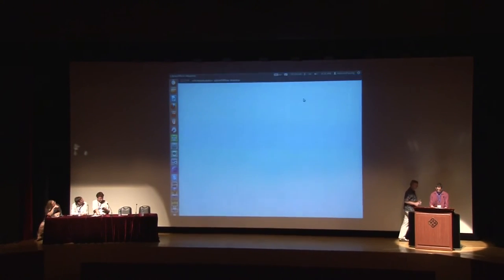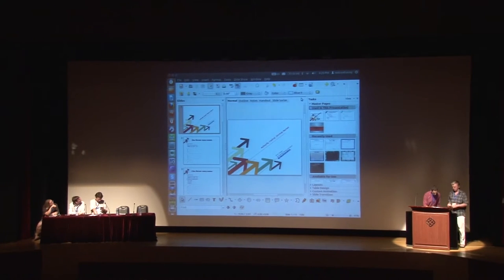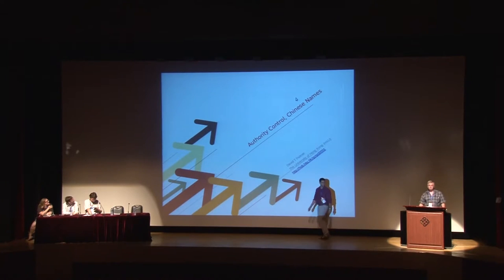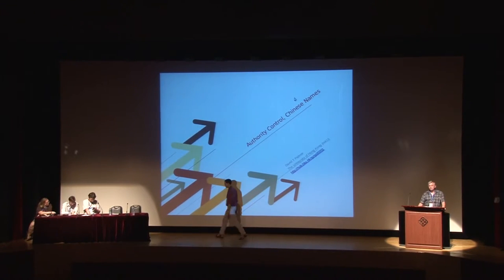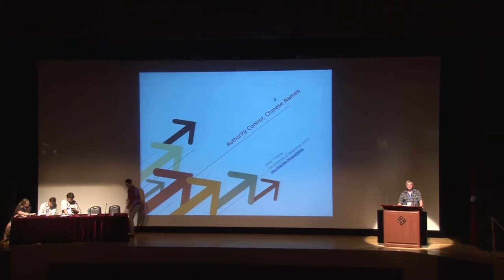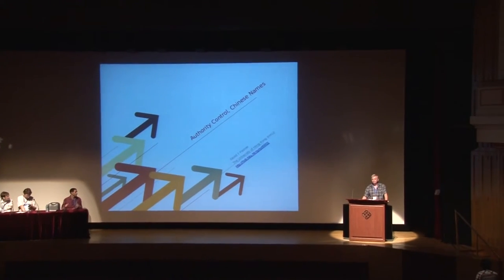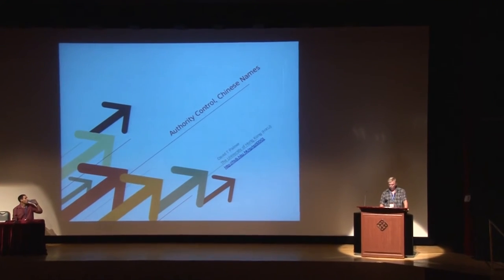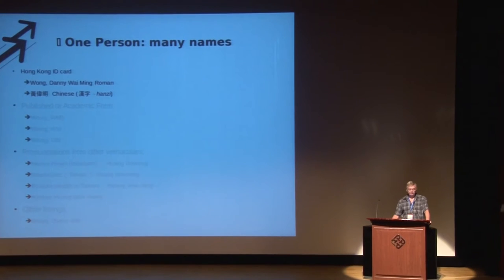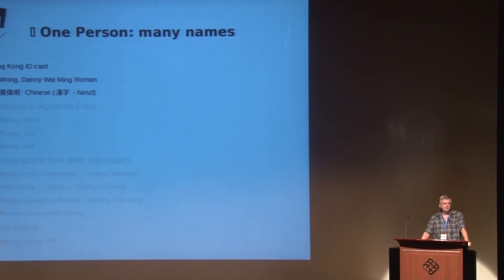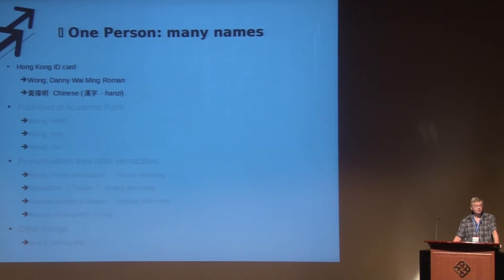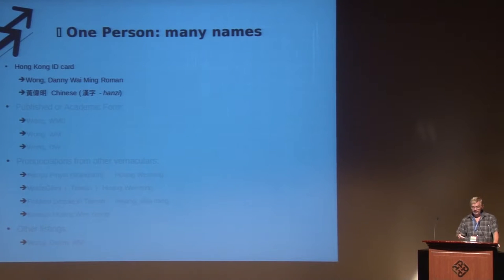Next up is David Palmer, who's going to focus on Chinese issues. At the University of Hong Kong, we created an authority control system in our institutional repository. I want to back up and explain why. I want to explain the problem of disambiguation. This screen starts with one person and shows he can have many names. The next will go the opposite way.